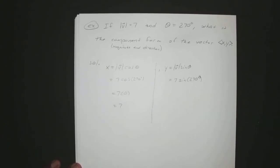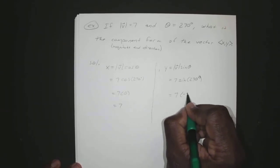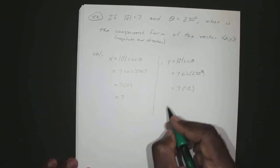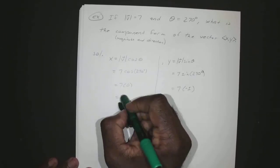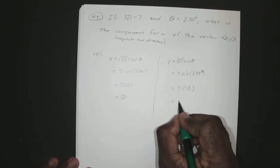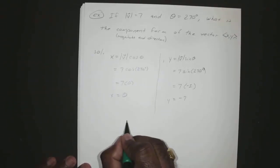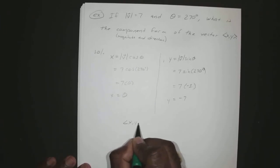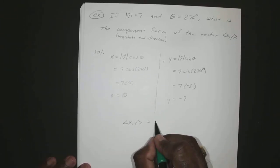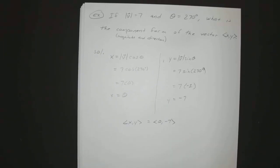Sine of 270 degrees is negative one, so 7 times negative one is negative seven. So your x is zero and your y is negative seven. That's your vector in component form.